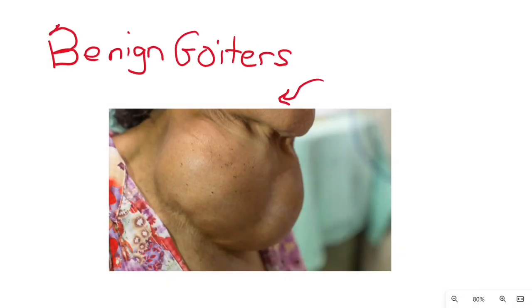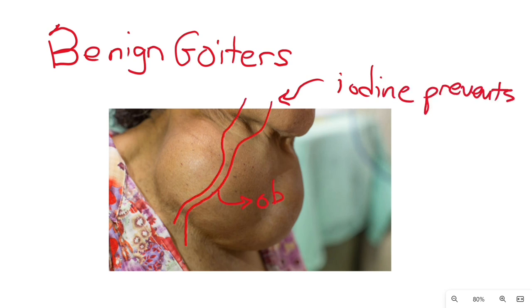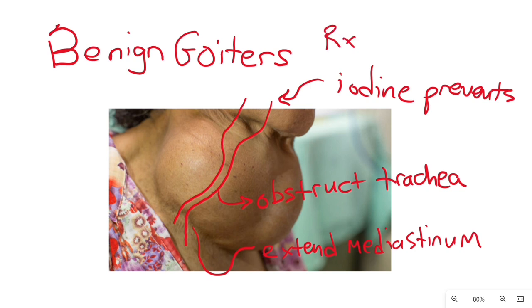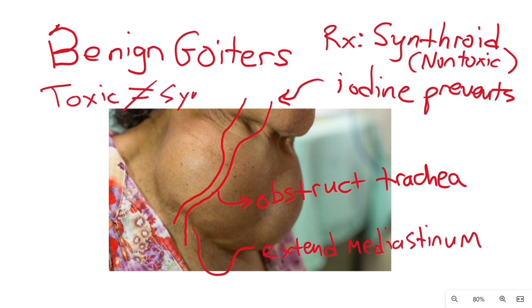Benign goiters are rare in modern countries due to iodine replacement in our diet from things like iodinated salt. Large goiters can obstruct the trachea and extend into the mediastinum. You can try thyroxine as medical treatment if it's a non-toxic colloid goiter. If it is a hyper-functioning toxic goiter, do not use thyroxine obviously, this just would exacerbate the hyperthyroidism. Symptomatic large goiters may need surgical removal, again with a total or a subtotal thyroidectomy.